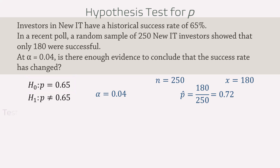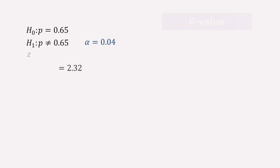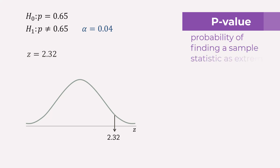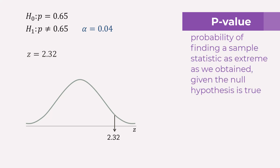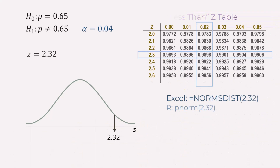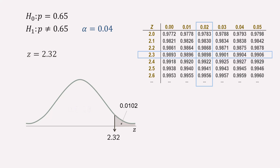Next, we can calculate the test statistic by substituting the values into the formula, and that gives 2.32. We can then calculate the p-value by finding the area in the tail beyond this test statistic under the normal curve. The p-value is the probability of finding a sample statistic as extreme as we obtained given the null hypothesis is true. Using the less-than normal probability table, the area corresponding to 2.3 under 0.02 is 0.9898. The upper tail area is thus 1 minus 0.9898, which gives 0.0102.